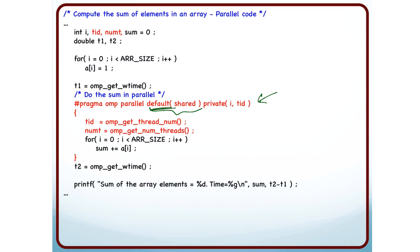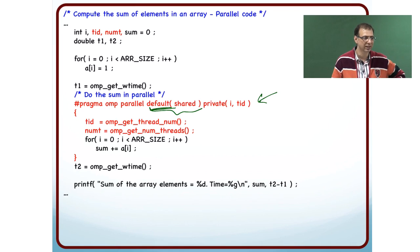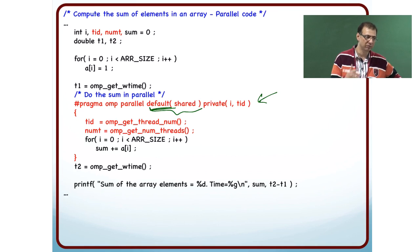So, there is a default keyword which I can use to say what the default behavior is. So, I can say default private and then what will happen is that everything that I do not explicitly scope, that I do not explicitly say whether that is private or shared, will be treated as private.